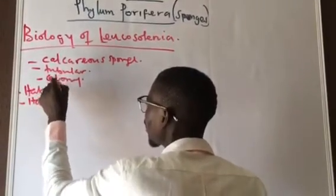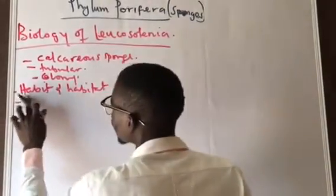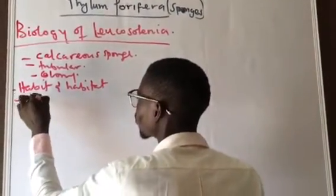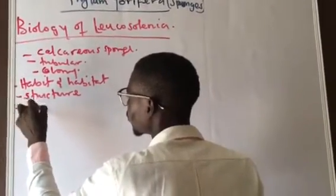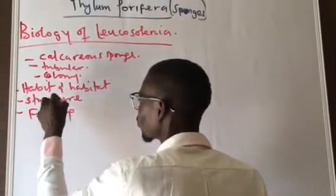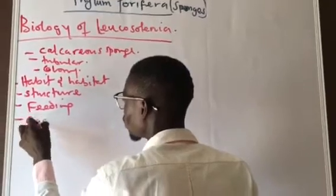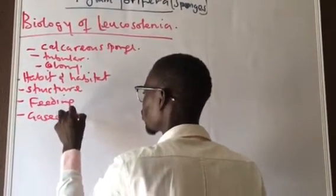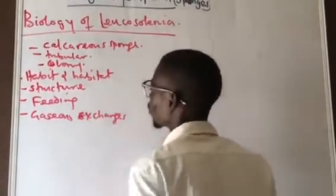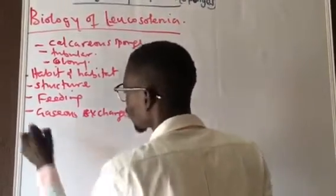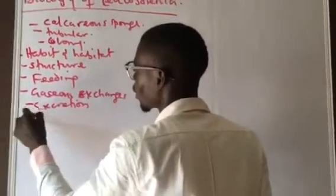We are going to talk about the habit and habitat, then the structure, then feeding, then gaseous exchange, and then excretion, and the last thing is reproduction.